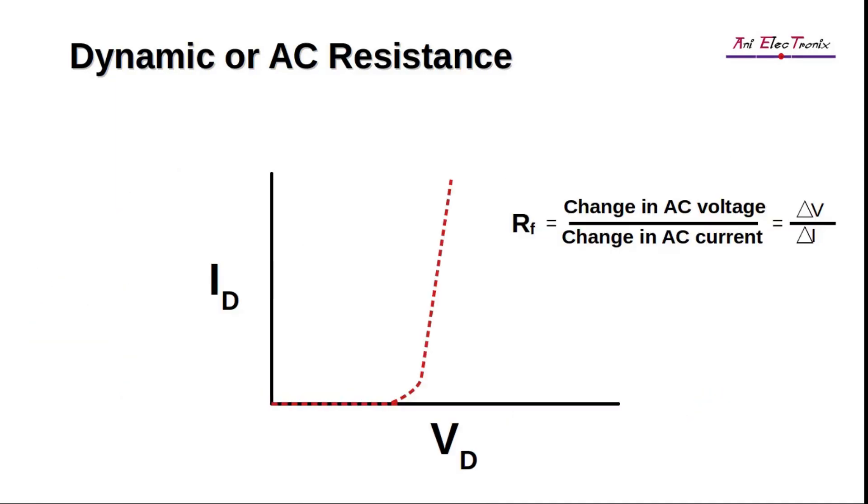The dynamic or AC resistance is defined by the ratio of the change in AC voltage across the diode to the change in AC current through it, denoted by RF. The slope value, as described in the animation, can be used to measure dynamic or AC resistance.